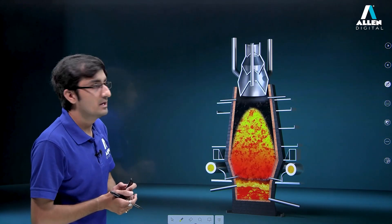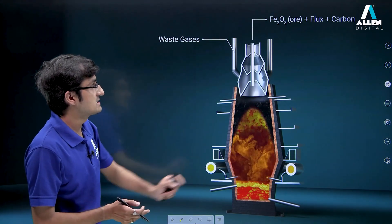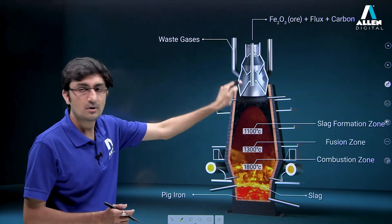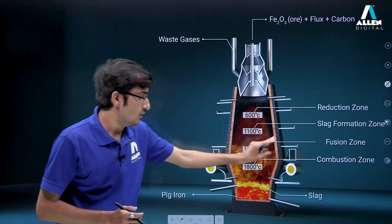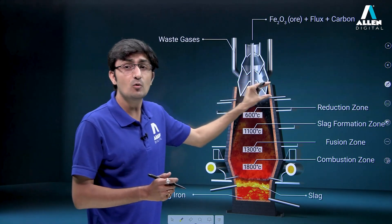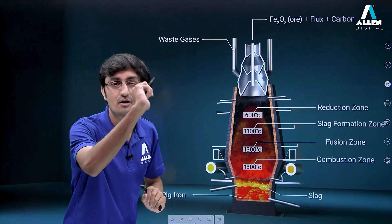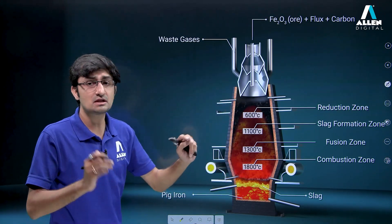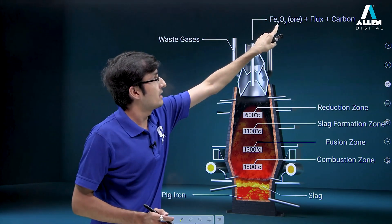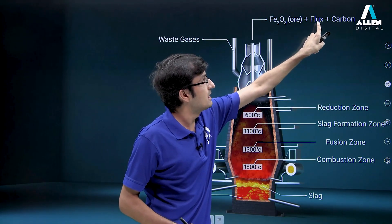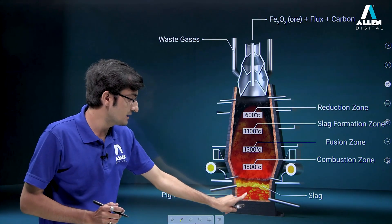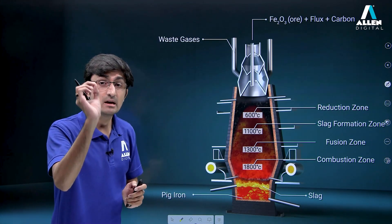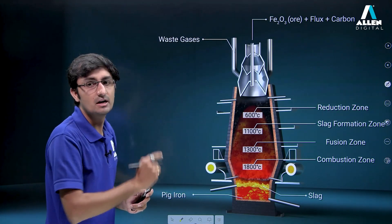This is your blast furnace. Let's do the labeling. Waste gases exit from the top. The input is ore plus coke plus flux. There is temperature variation — different zones at different temperatures. From highest to lowest temperature: combustion zone at the bottom, then fusion zone, then slag formation zone, then reduction zone at the top. The highest temperature is at the bottom; the lowest is at the top. Iron obtained settles at the bottom; slag, being lighter, floats above the molten metal.